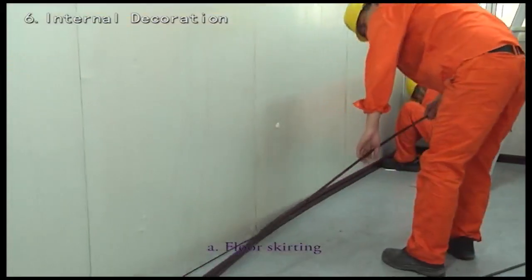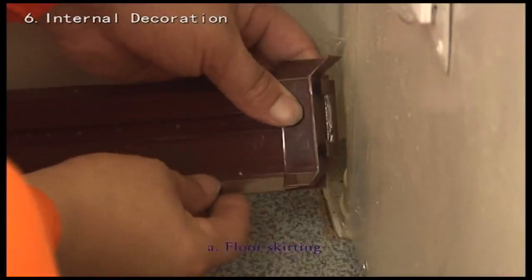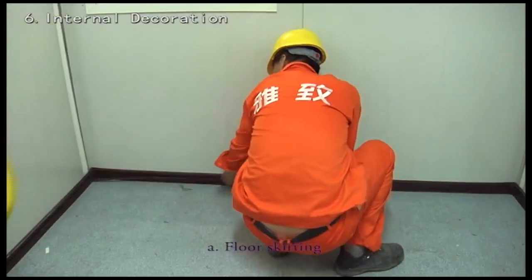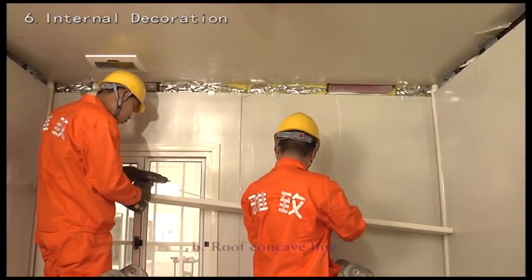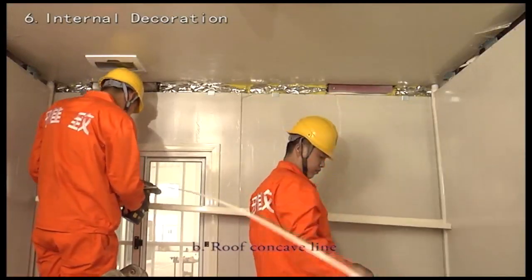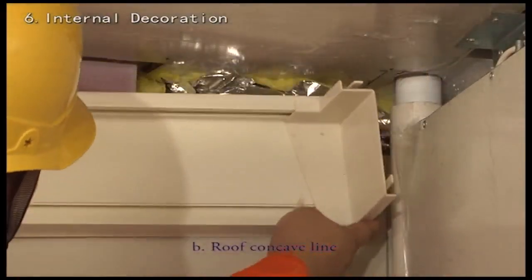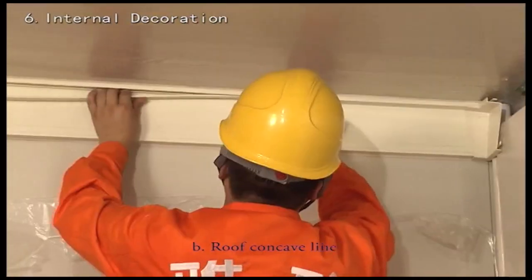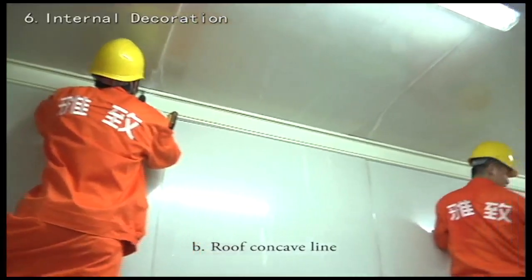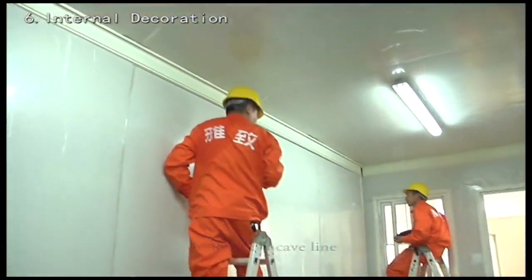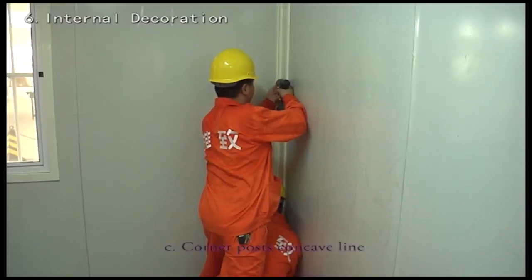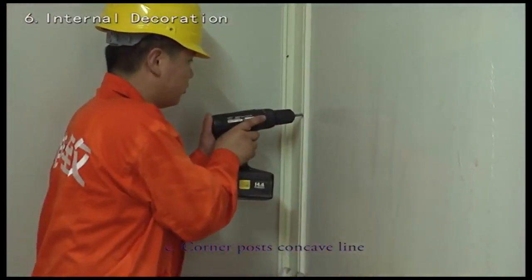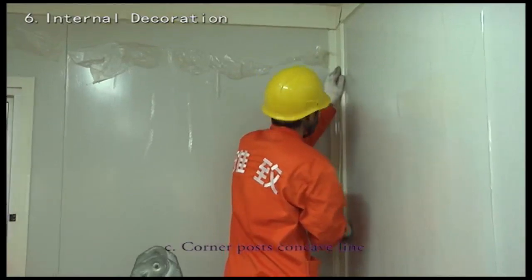Floor skirting, attach floor skirting and screw covering. Roof concave line, fix roof concave line using self-tapping screws then close the cover. Corner post concave line, fix corner post concave line using self-tapping screws then close the cover.